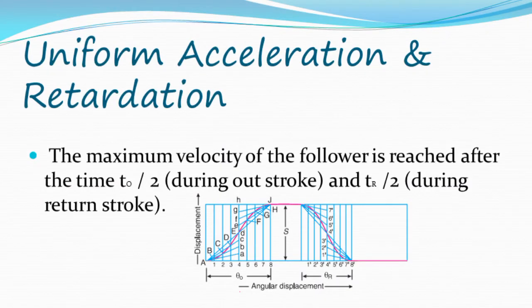Uniform acceleration and retardation: The maximum velocity of the follower is reached after the time T/2 during outstroke, and TR/2 during return stroke.